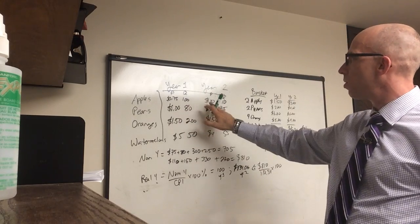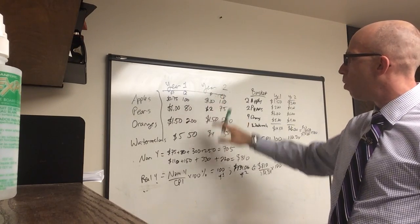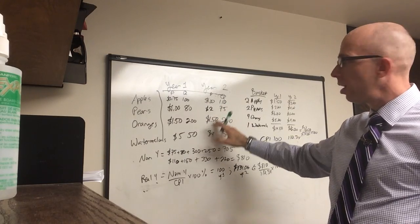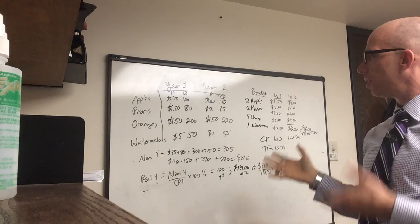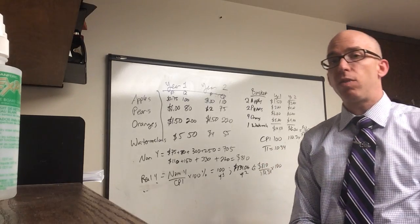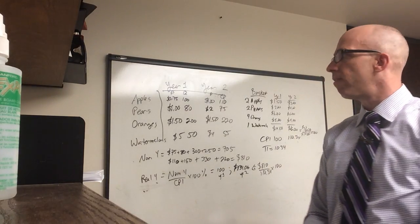So year two, the price goes up of apples, and there's more. Pears go up in price, but there's fewer. Oranges, you see the same price, but there's more oranges. And watermelons, they go down in price. And so we can find a way to compare all those ups and downs of prices, too.